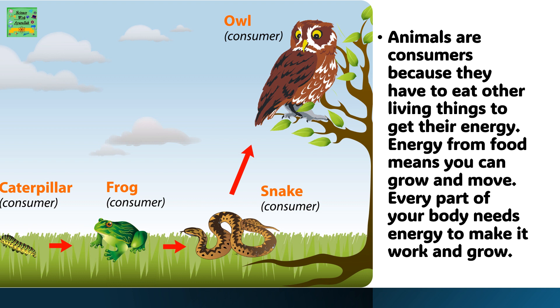Animals are consumers because they have to eat other living things to get their energy. Energy from food means you can grow and move. Every part of your body needs energy to make it work and grow.